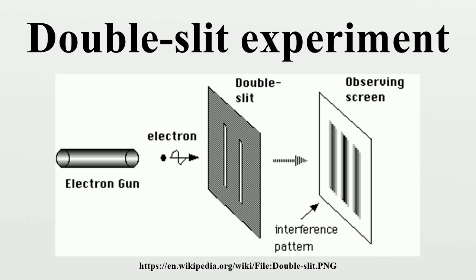However, the light is always found to be absorbed at the screen at discrete points, as individual particles. The interference pattern appears via the varying density of these particle hits on the screen. Furthermore, versions of the experiment that include detectors at the slits find that each detected photon passes through one slit and not through both slits. These results demonstrate the principle of wave-particle duality.